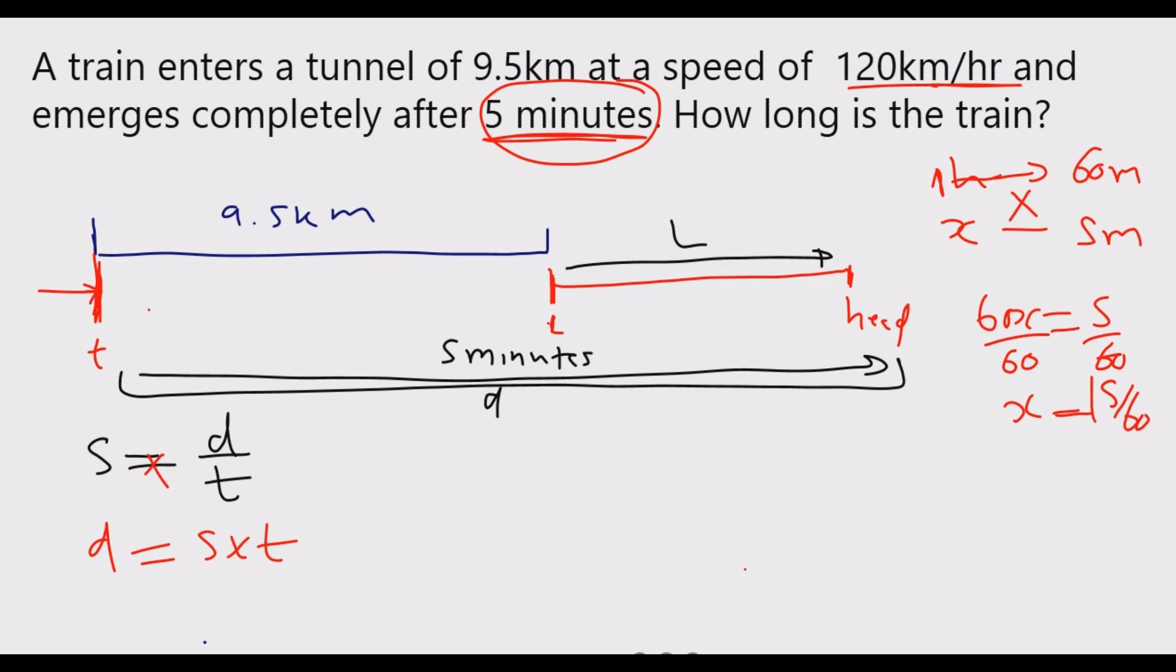Then we divide both sides by 60, so time which is x is equal to 5 over 60 in hours. Once you do that, whatever the speed is, you substitute. You're going to find the total distance from here to there.